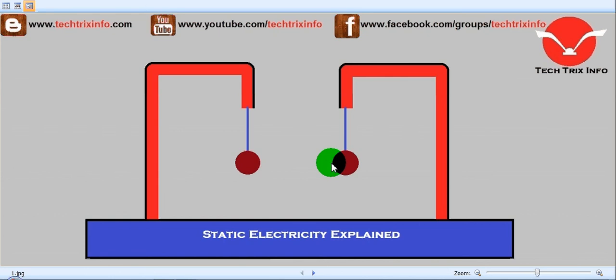And this is due to static electricity. Static electricity is created on or inside these balls which results in them attracting each other. As I told you, static electricity is the electricity at rest.